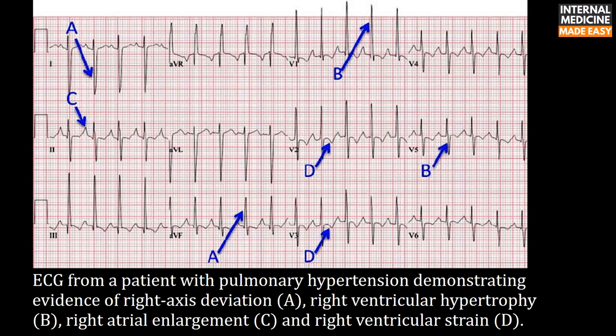This ECG from a patient with pulmonary hypertension demonstrates right axis deviation shown with A in leads I and aVF, right ventricular hypertrophy shown with B in leads V1 and V5, right atrial enlargement shown with C in lead II, and right ventricular strain shown with D in leads V2 and V3.